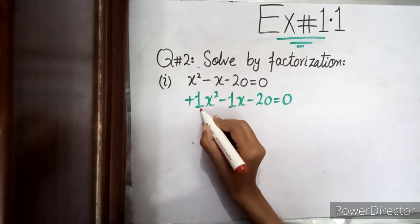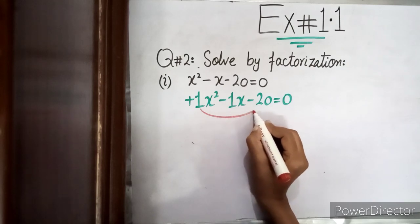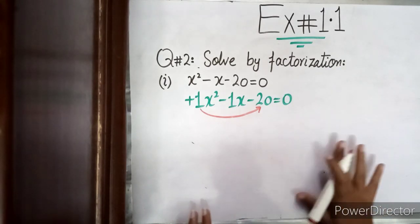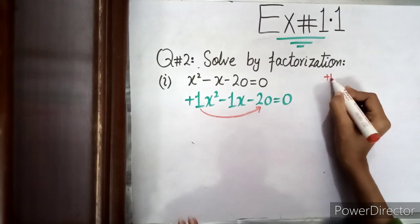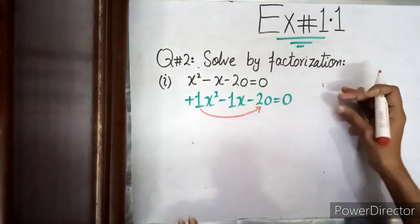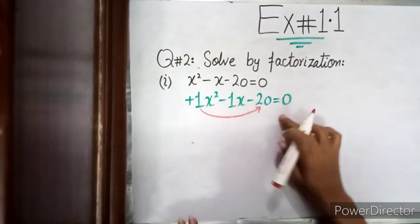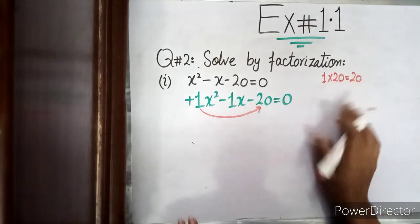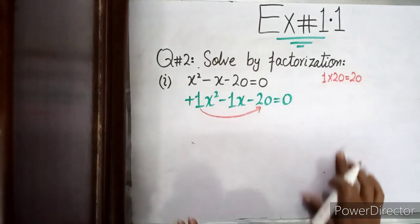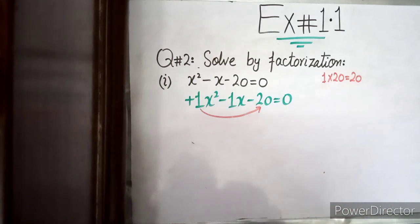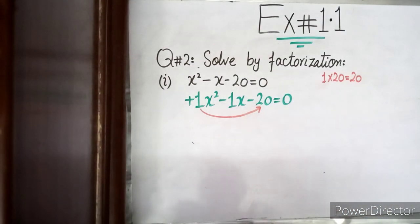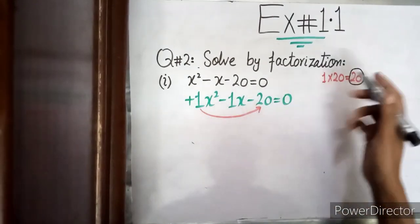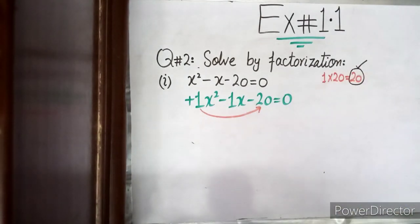The second step is to multiply the first number by the last number. This is rough work. You multiply the first coefficient by the last term — you can also multiply their signs. For example here, multiplying gives 20.